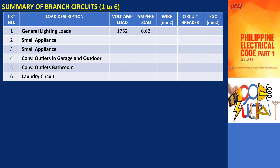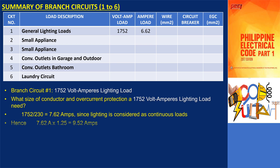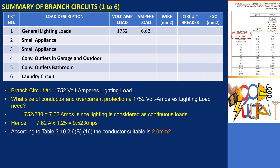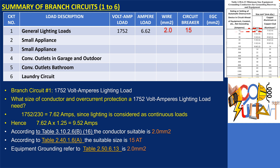To continue with the sample project, what will be the size of the conductors for general lighting with 1,752 volt amperes? Since lighting is considered a continuous load, it shall be at least 125% of the full load current. Therefore, the conductor's minimum size shall not be lower than 9.52 amperes. According to table 3.10.2.6.16, a conductor of 2 square millimeters is suitable. Use a 15-ampere circuit breaker for the overcurrent protective device, and for the equipment grounding conductor, use 2 square millimeters.